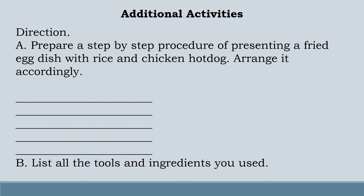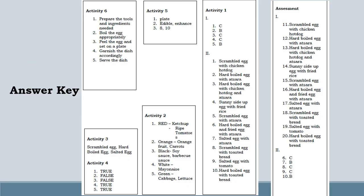Additional activities — Direction: Letter A: Prepare a step-by-step procedure of presenting a fried egg dish with rice and chicken hot dog. Arrange it accordingly. Letter B: List all the tools and ingredients you use. You can check your answer with this answer key. Thank you for learning with me and I hope to see you in our next video lesson.